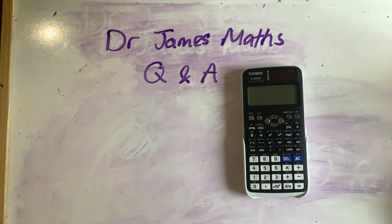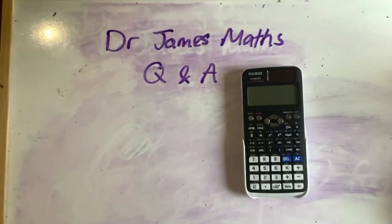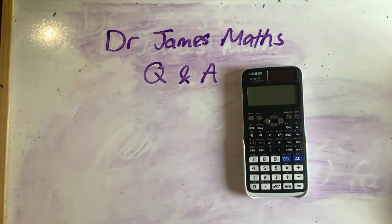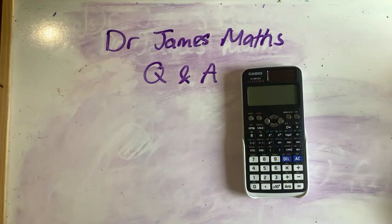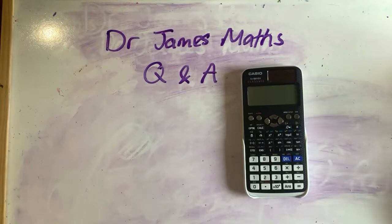If a value is in the critical region, do you accept or reject the null hypothesis? It depends what the null hypothesis is. If you're saying that it's going to change, and it's in the critical region, then you say it's changed — which means you're rejecting the null hypothesis. If it's in the critical region, that means there's sufficient evidence to say that it's not the null hypothesis, therefore you reject it.